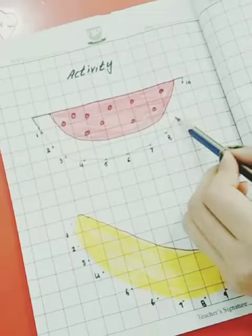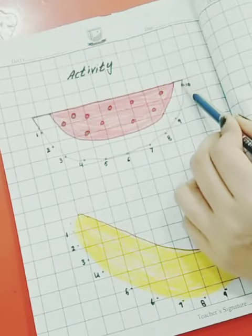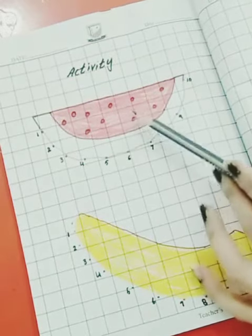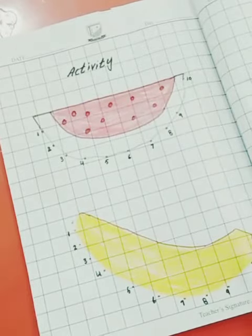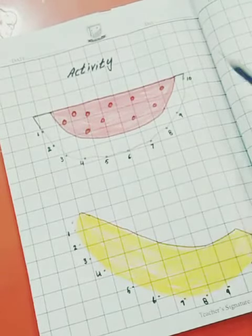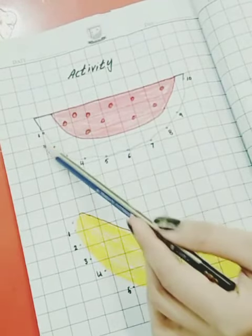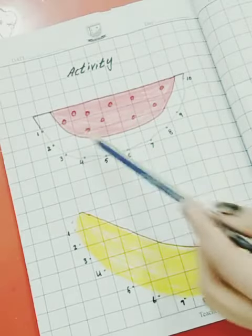And nine to ten. Now our watermelon is complete. We have completed it. Earlier it was not complete. We started the numbers from one to ten and drew the lines, so our watermelon is complete.